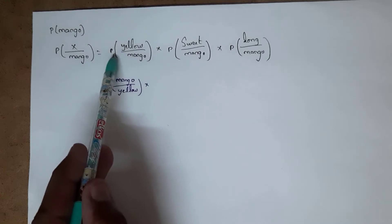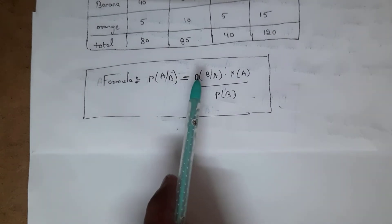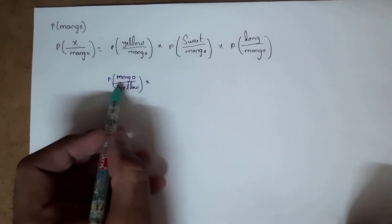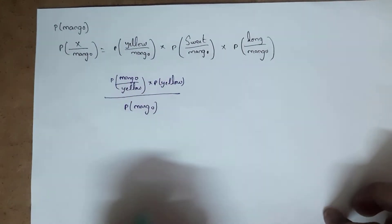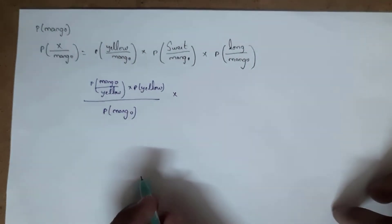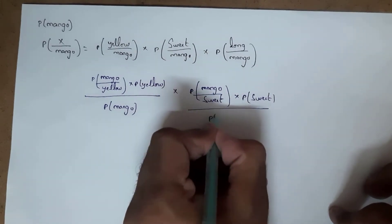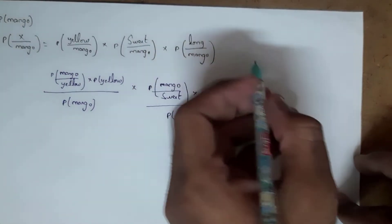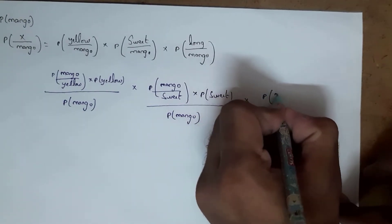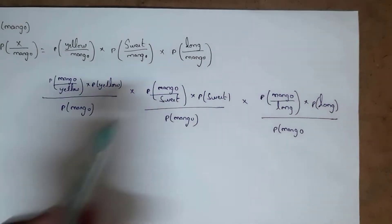Applying Bayes' theorem: P(yellow|mango) = P(mango|yellow) × P(yellow) / P(mango). Similarly, P(sweet|mango) = P(mango|sweet) × P(sweet) / P(mango). And P(long|mango) = P(mango|long) × P(long) / P(mango). We have now applied Bayes' theorem to all three property terms for mango.